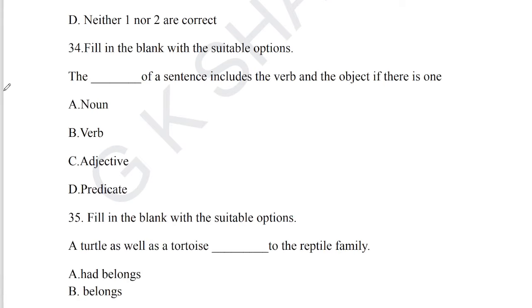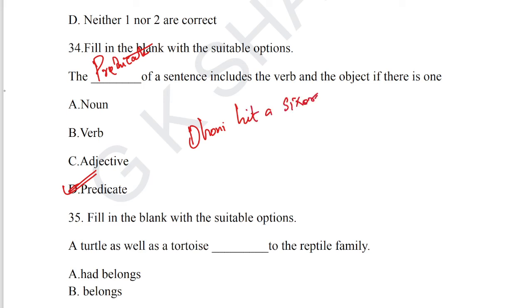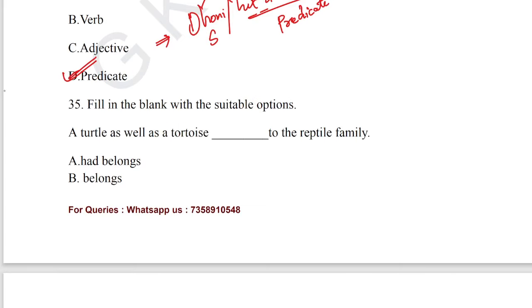Question number 34: fill in the blank, from the sentence pattern section. 'The dash is the part of a sentence including the verb and the object if there is one.' The answer is option D — predicate. The predicate is the part of the sentence that explains the context related to the subject. For example, in 'Dhoni hits a sixer', 'Dhoni' is the subject and the remaining part is the predicate. Option D is the correct answer.